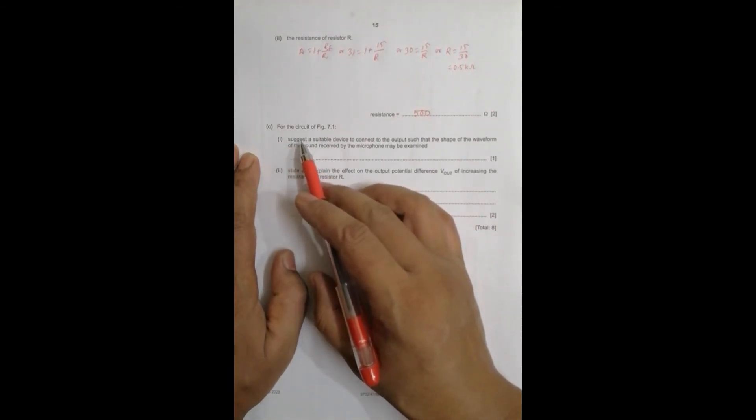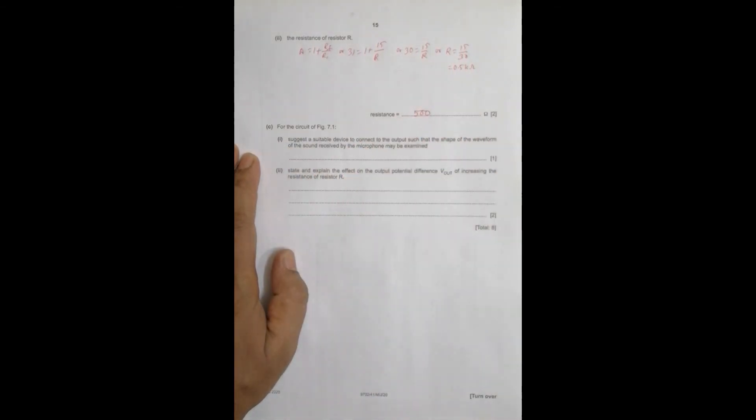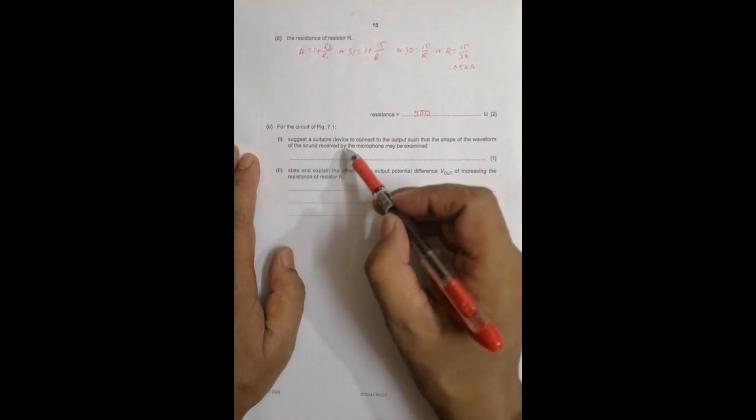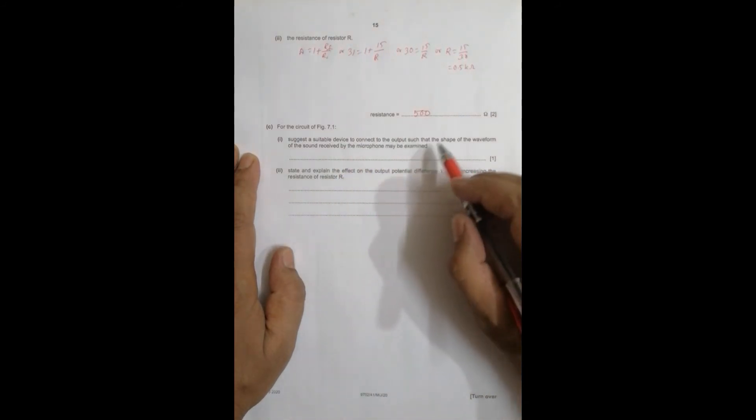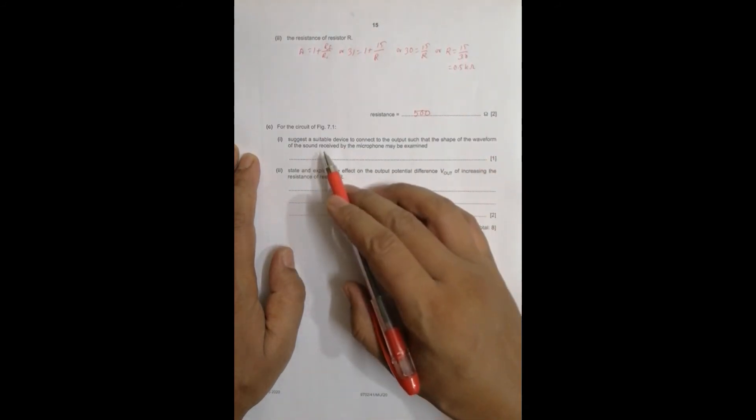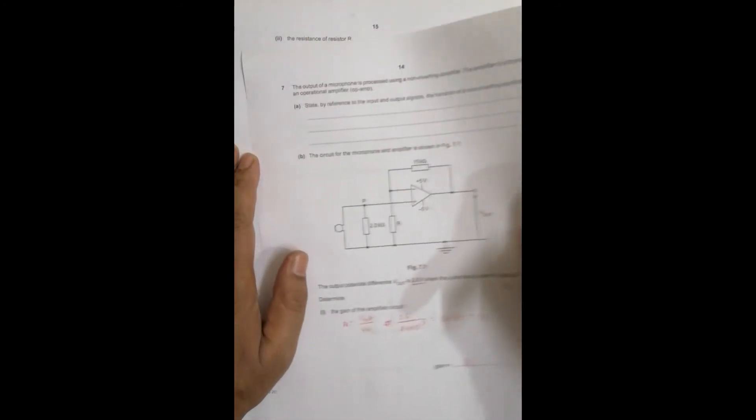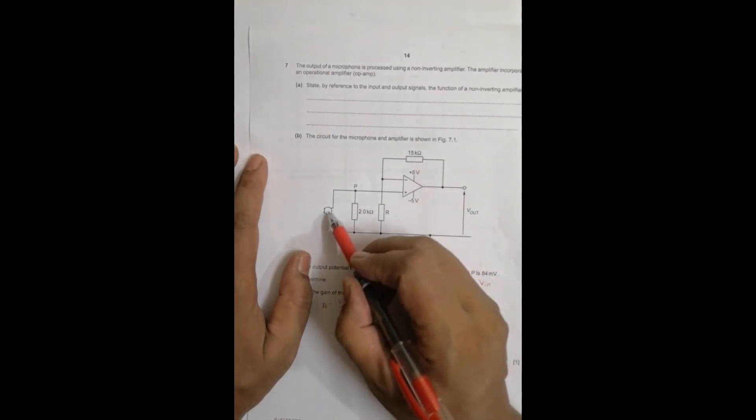Number C, for the circuit of figure 7.1, so this is the circuit here. Suggest a suitable device to connect to the output such that the shape of the waveform of the sound received by the microphone may be examined. So we have to suggest a device for this. So here we have got a microphone.